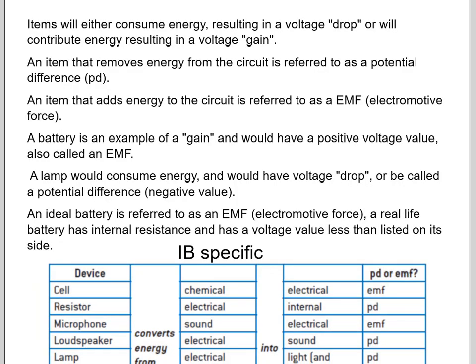Items will either consume energy resulting in a voltage drop, so drop is consume, or they'll contribute energy to the system and we'll call that a gain. For IB people the item that removes energy from a circuit is called a potential difference or a PD. An item that adds energy to the circuit is referred to as an EMF or electromotive force. Just a reminder it's not really applying force. It's just sort of that pressure or that push to move. A battery is an example of a gain because it's adding energy to the system, adding push to the system and it would have a positive voltage.